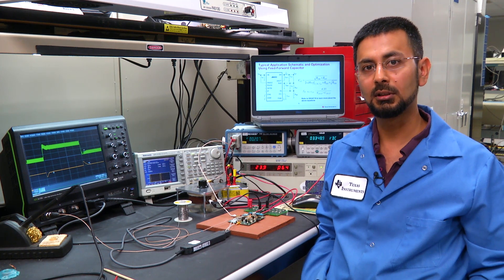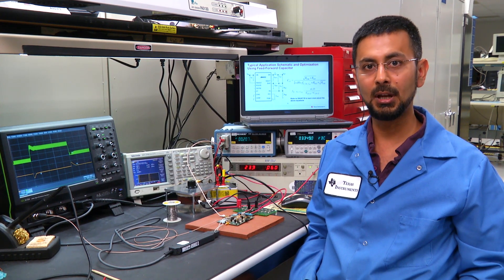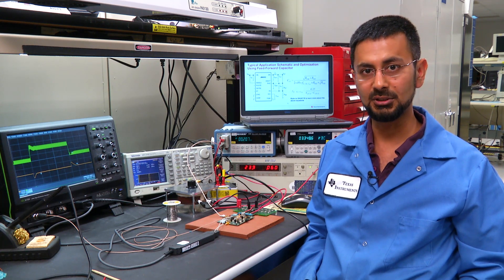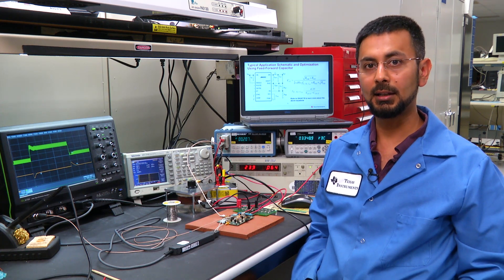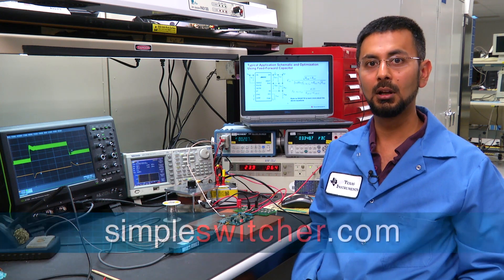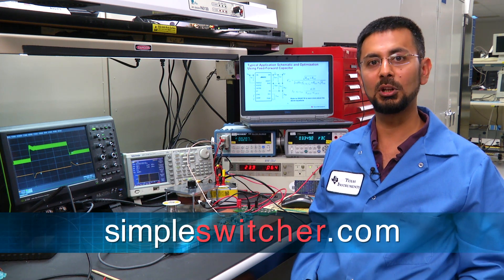Therefore in conclusion, the LM4360X and the 4600X family of devices are very easy to use with internal compensation and can be easily optimized by adding just one component, the feed forward capacitor. For more information please visit simpleswitcher.com and thank you for watching.